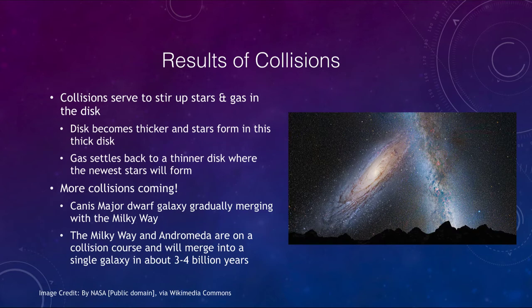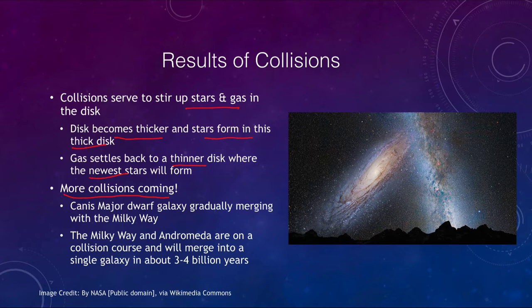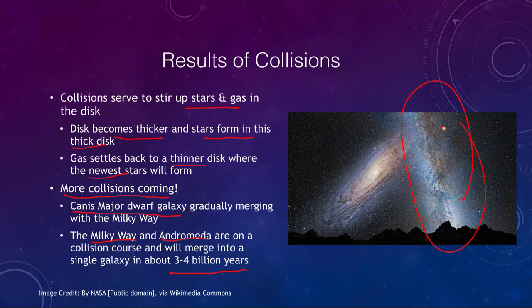The results of these collisions is that they serve to stir up the stars and gas in the disk — the disk becomes thicker and stars form in this thick disk, whereas gas settles back down to a thinner disk where the newest stars form. So we get various layers ranging from the halo with the oldest stars, to the thick disk, down to the thin disk where the newest stars are forming. The Canis Major dwarf galaxy is gradually merging with the Milky Way and will eventually become incorporated within it.